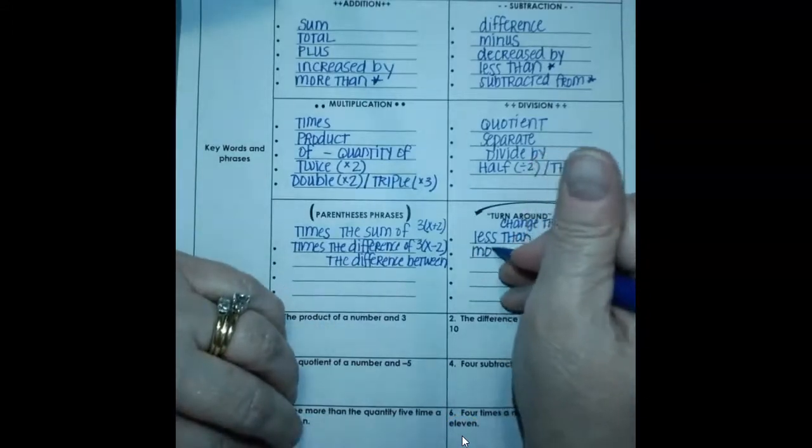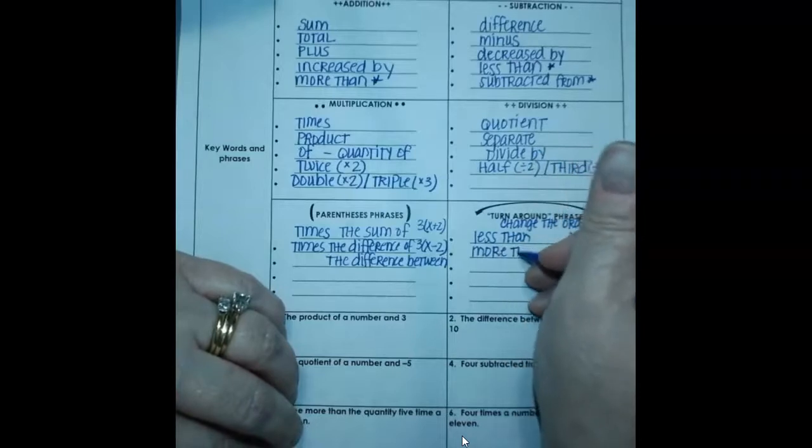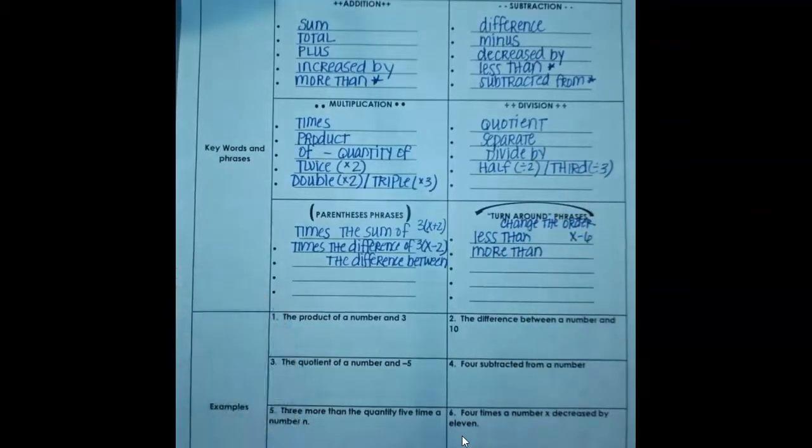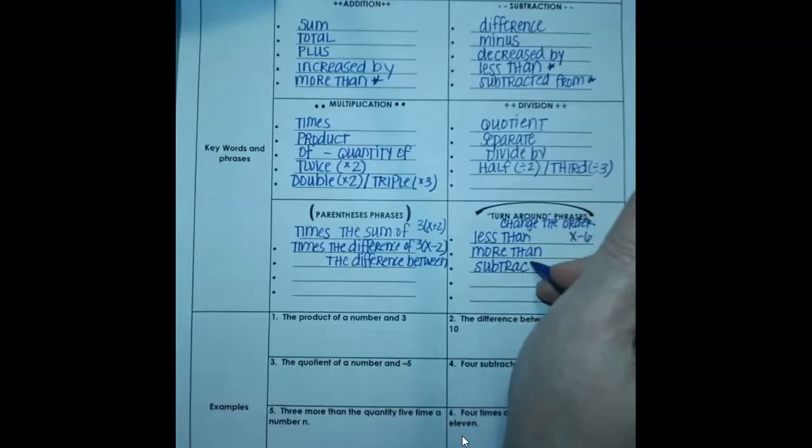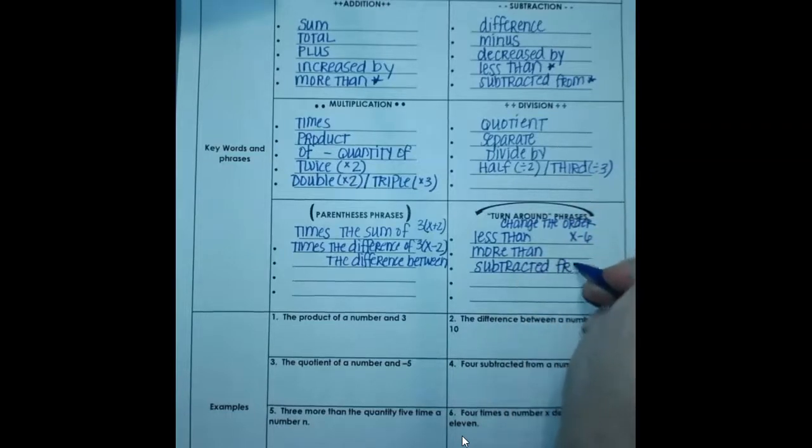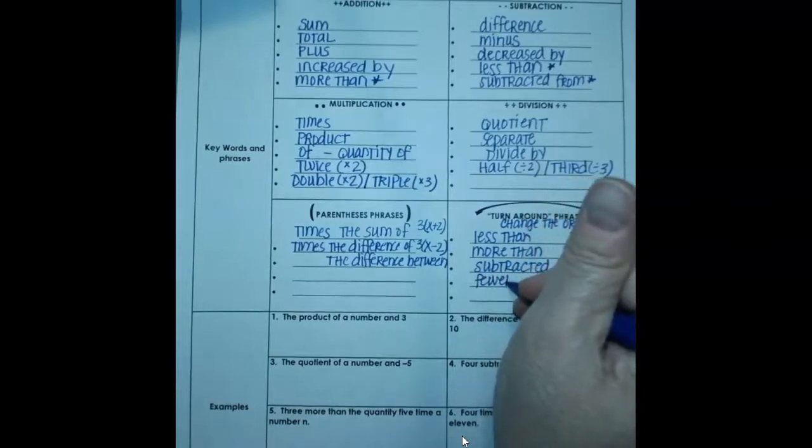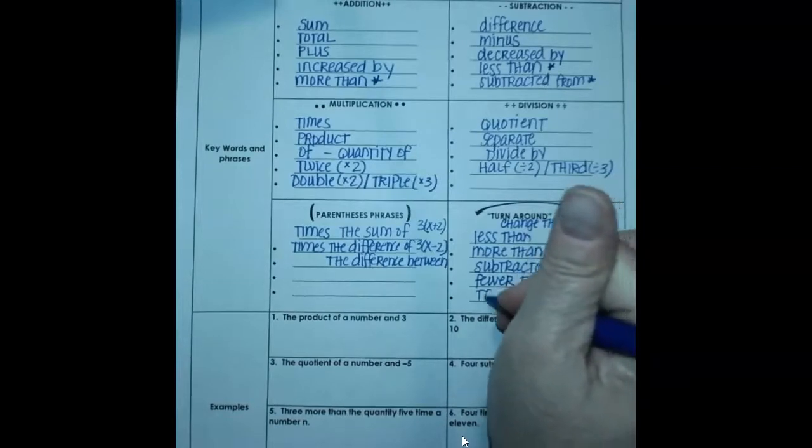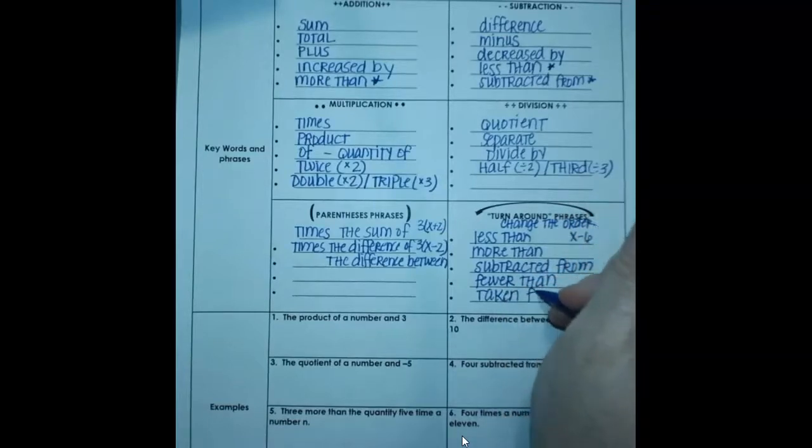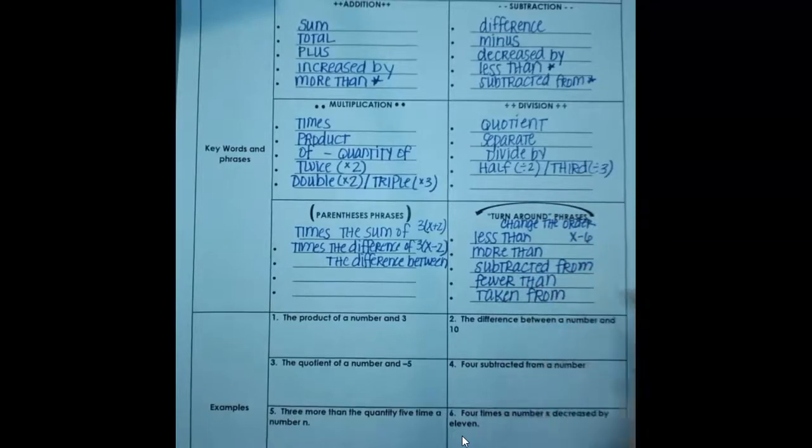The other one that's very similar to that is more than. Same idea. You're going to change the order in which the expression is written. Subtracted from. Fewer than. And taken from. So these are all things that could show up. That means just take what they wrote, but change the order in which they're written when you write them in terms of an algebraic expression.